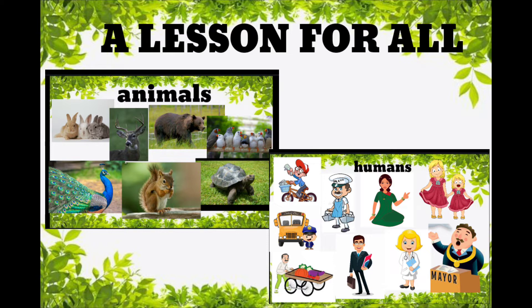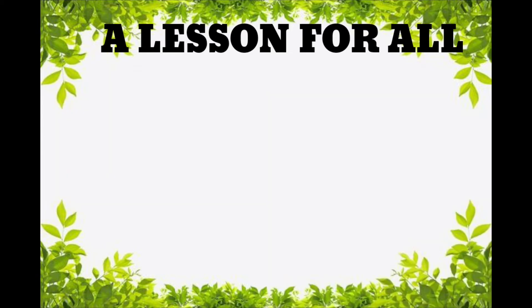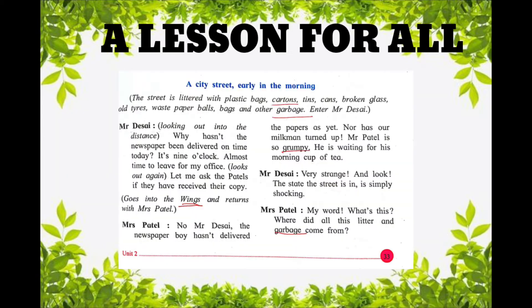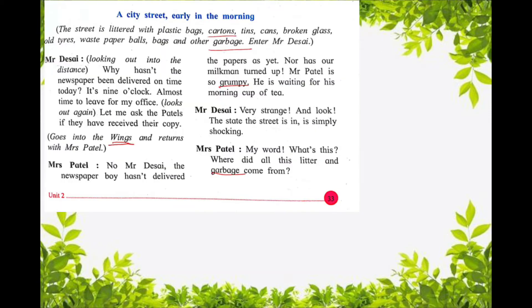The lesson is very easy, we will start. The lesson now: 'A Lesson for All'. A city street early in the morning — it was early morning time and a city street means the road of the city.